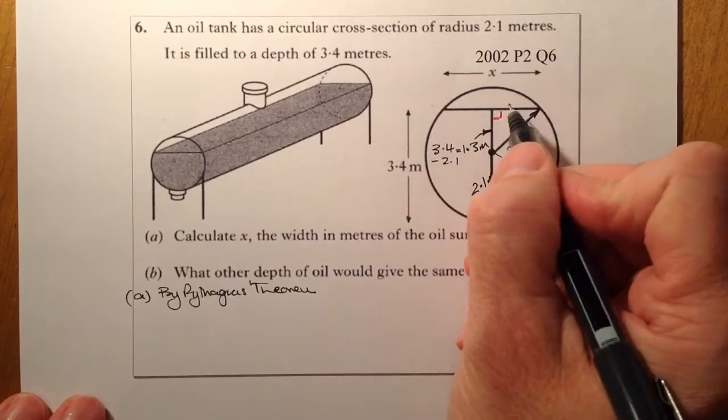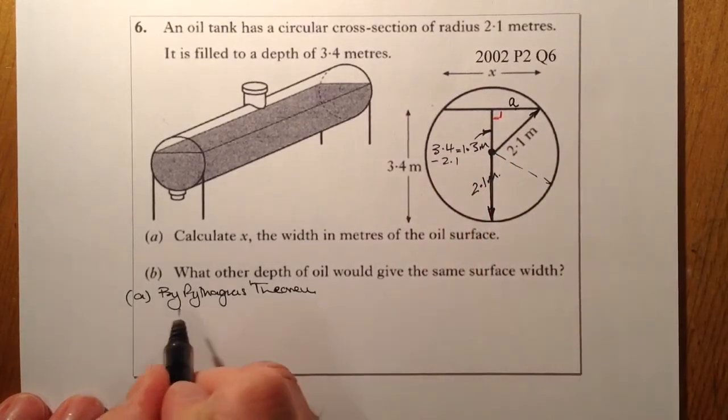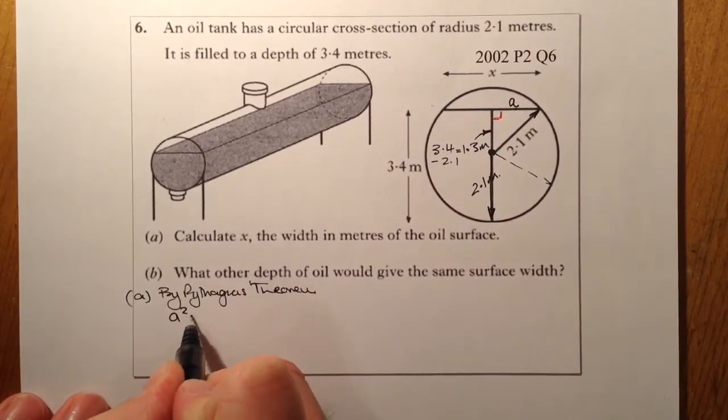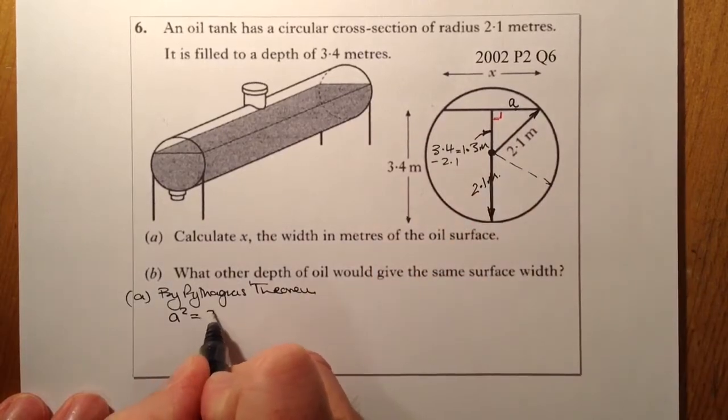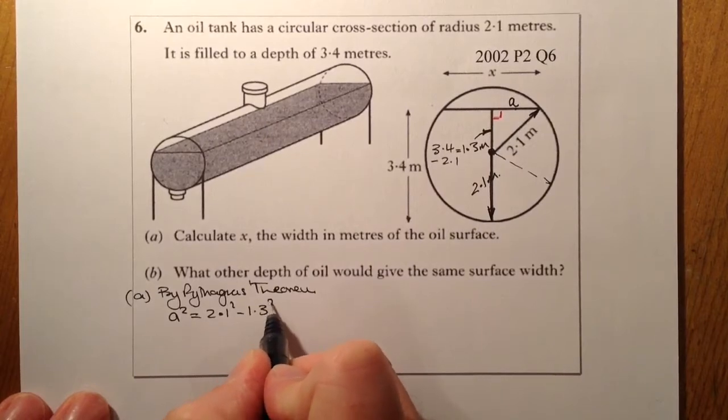I'm going to say that A squared is going to be equal to 2.1 squared, which is the longest side, subtract one of the shorter sides, which is 1.3 squared.